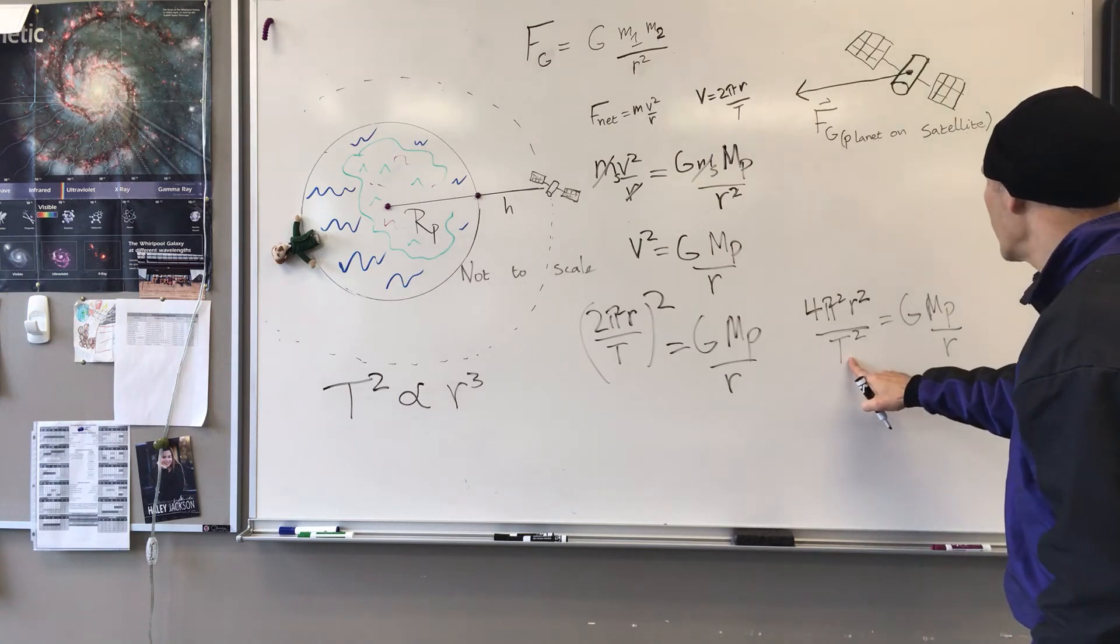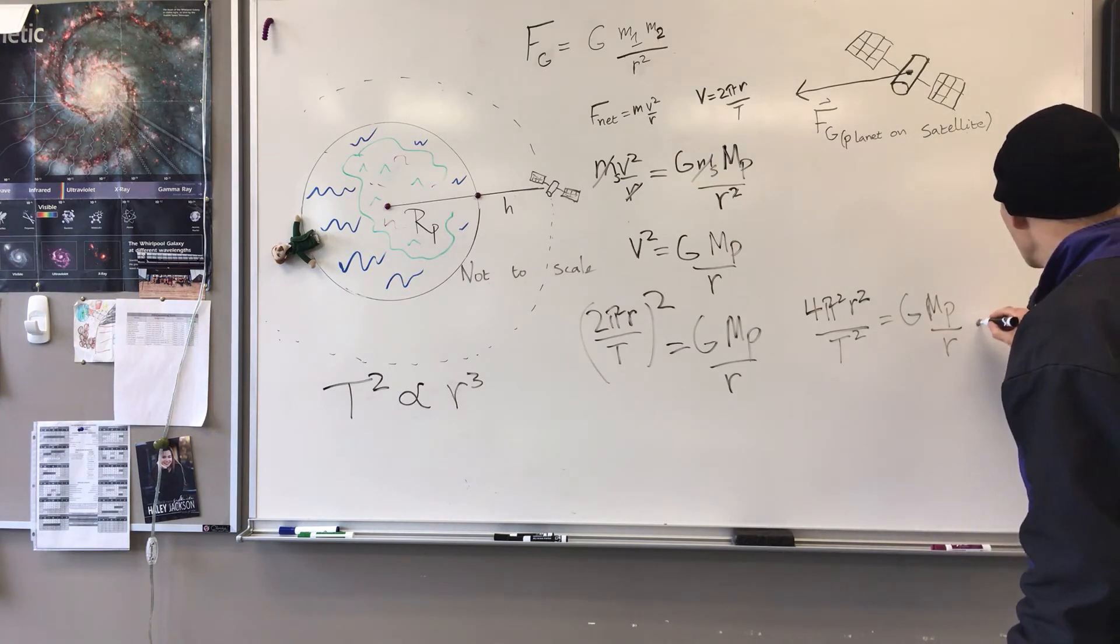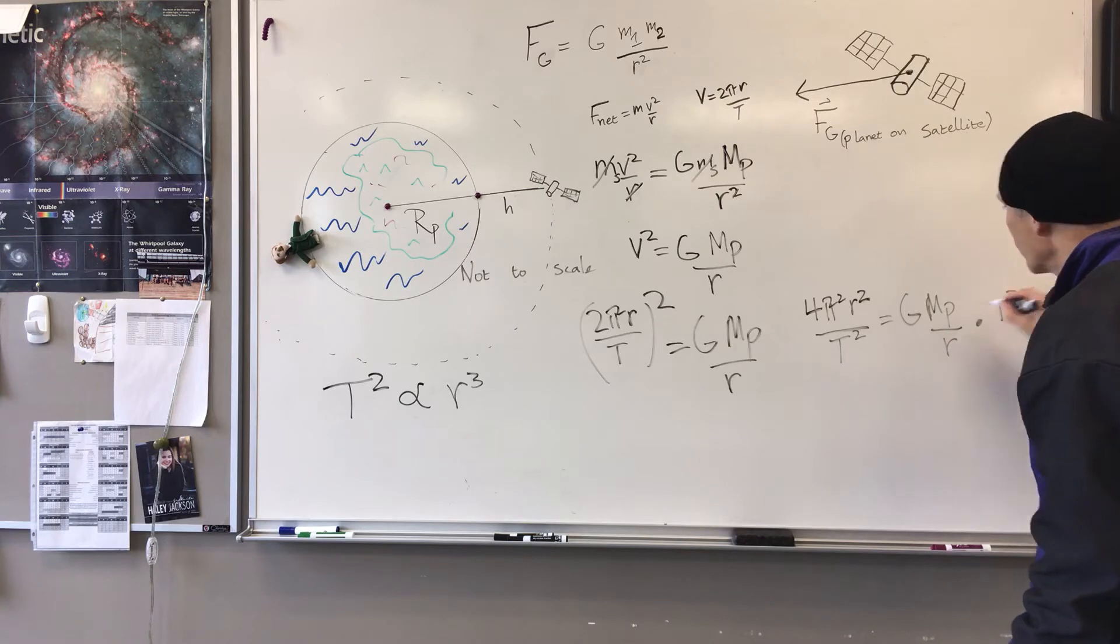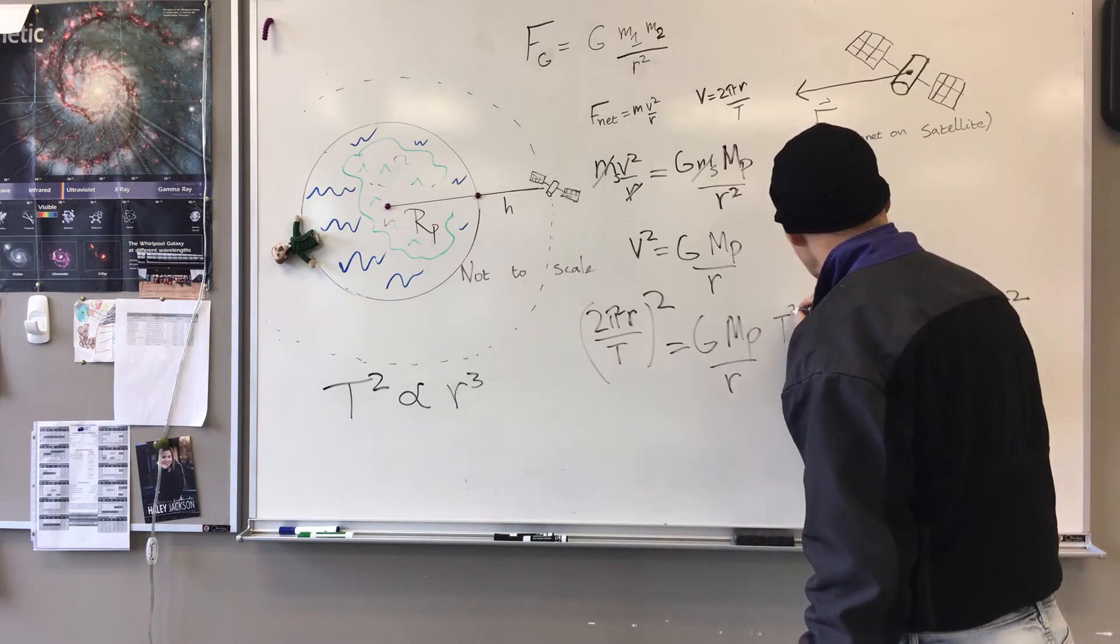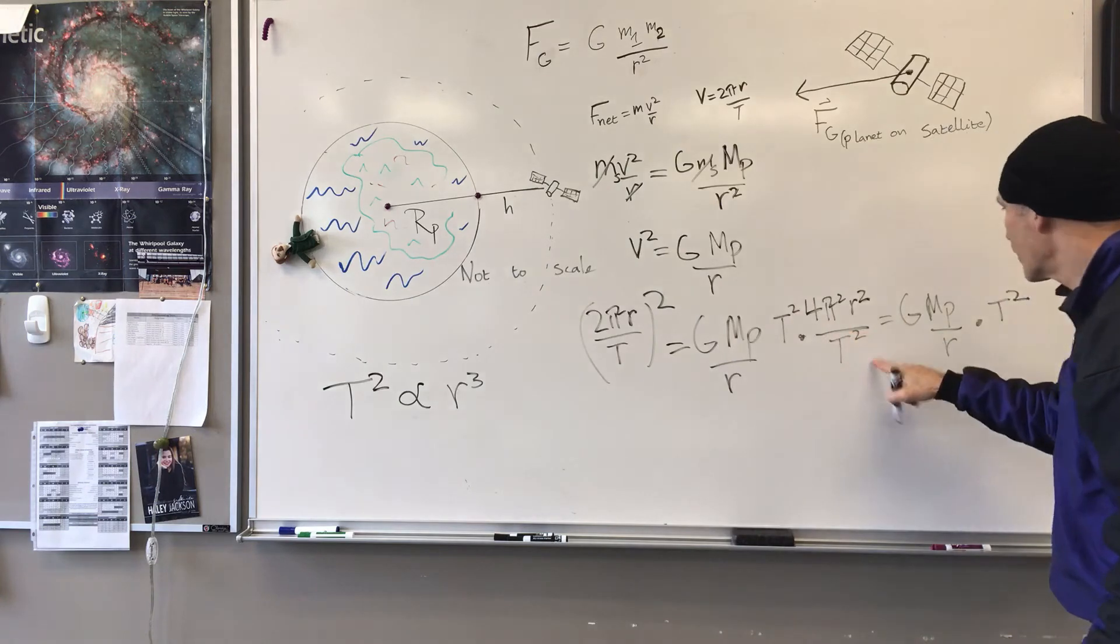So I'll multiply both sides by T squared. That divides out T squared on the left.